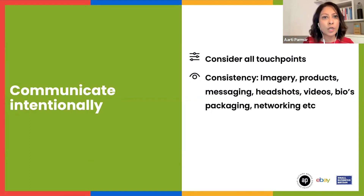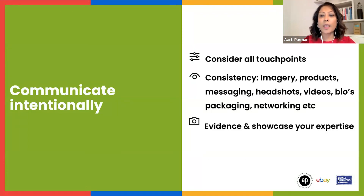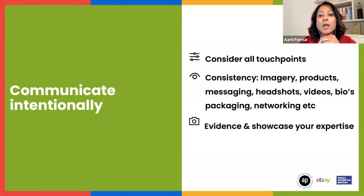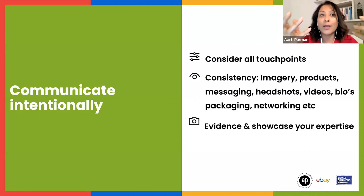Consistency in your imagery, products, messaging, and headshots — these are the things to look out for. On the eBay portal you can have a profile cover, and the same goes for social media. Take advantage of videos and those kinds of things, ensuring that consistency is there. Now that you know who you want to appeal to and attract, it's not just about knowing — it's about doing. Inform and let people know by evidencing and showcasing your expertise and why your product has worked so well for others.